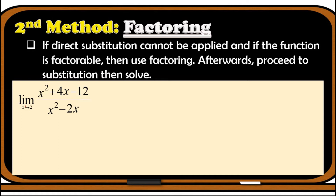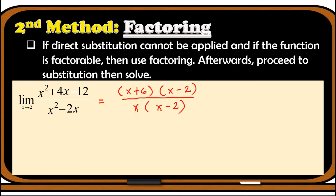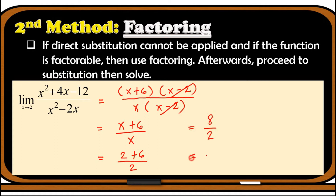Third factoring example: find the limit of x squared plus 4x minus 12 over x squared minus 2x as x approaches 2. We apply factoring since plugging in 2 gives 0 in the denominator. The numerator factors as x plus 6 times x minus 2 by quadratic trinomial factoring. The denominator factors as x times x minus 2 by common monomial factoring. Cancel x minus 2, leaving x plus 6 over x. Substituting 2: 2 plus 6 over 2 equals 8 over 2, which is 4. The limit is 4.